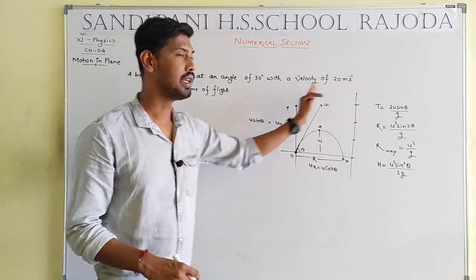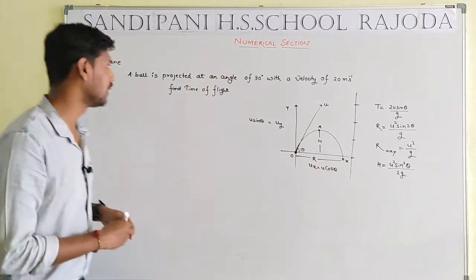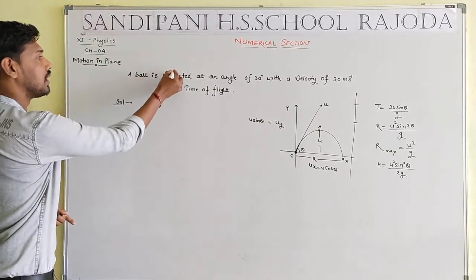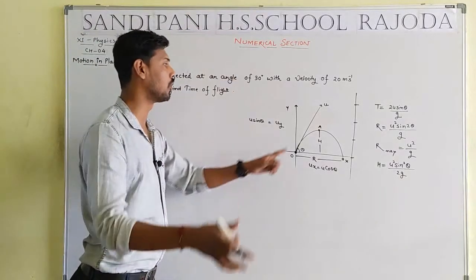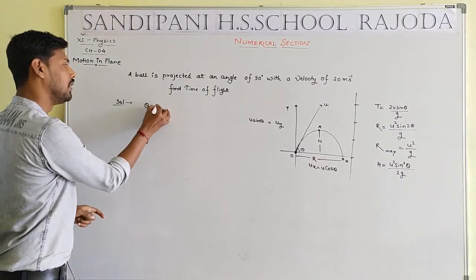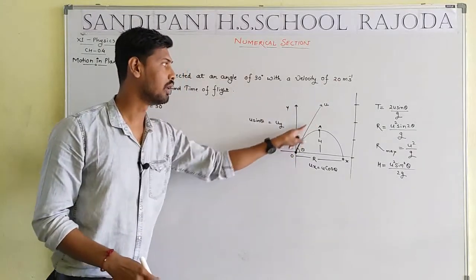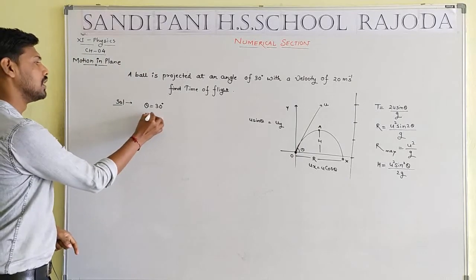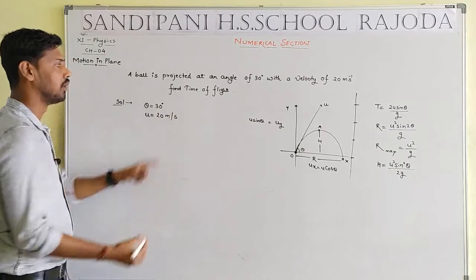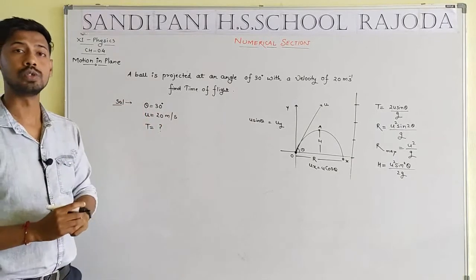You should remember all these terms whenever you solve numericals related to projectile motion. Now we solve the first numerical. A ball is projected — that means a ball is thrown at an angle of 30 degrees, so theta equals 30°. Initial velocity u equals 20 m/s. We have to calculate the time of flight, capital T.